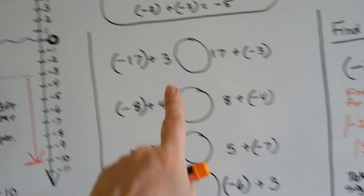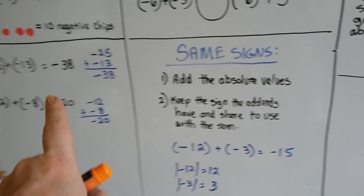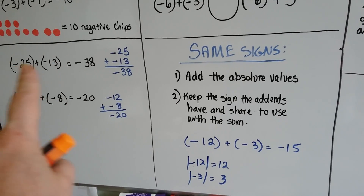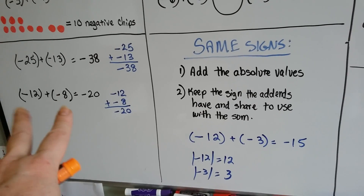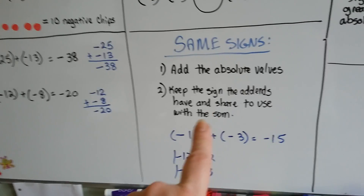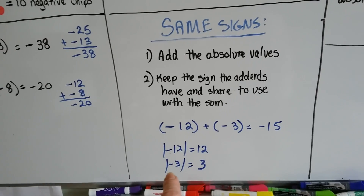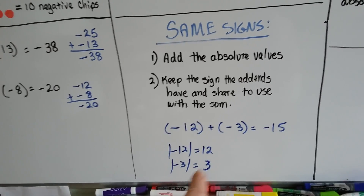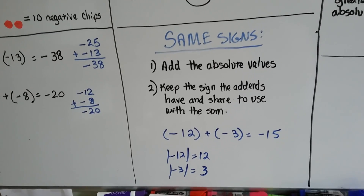When they have the same sign, you find the absolute values — their distance from 0 — and then whatever sign they share is the sign that's going to be used with the sum. The absolute value of negative 12 is 12, and the absolute value of negative 3 is 3. We add those together and get 15. They both have a negative sign they're sharing, so it's negative 15.